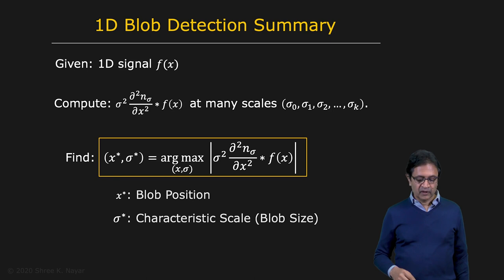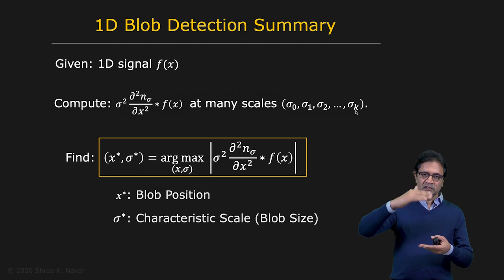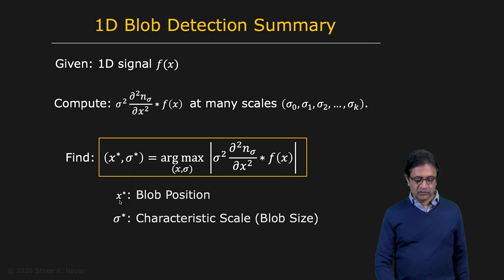So now we know how to do blob detection in 1D. You take a 1D signal image and apply the sigma normalized second derivative of the Gaussian at many different scales, from sigma zero all the way to sigma k. You then have a stack and go in there to find the x-sigma pairs where you have extrema. The x-star, which is your extremum, corresponds to the position of the corresponding blob, and sigma-star is the scale or size of the blob.